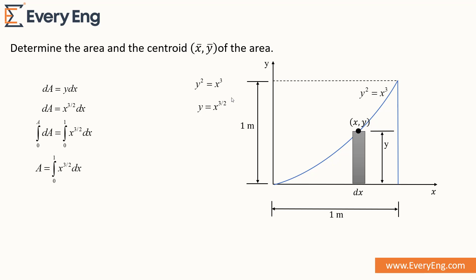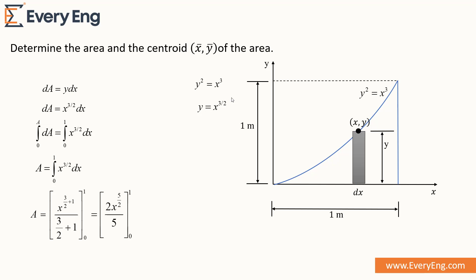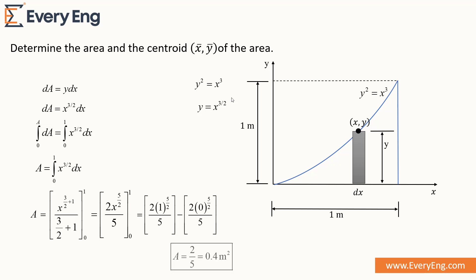After solving the integration, the area equals the integral from 0 to 1 of x^(3/2) dx. Putting in the upper and lower limits and simplifying, we get the area of this figure is 2/5, which is equal to 0.4 m².